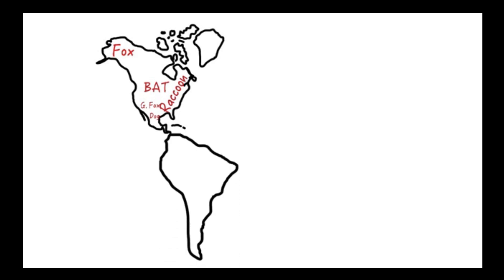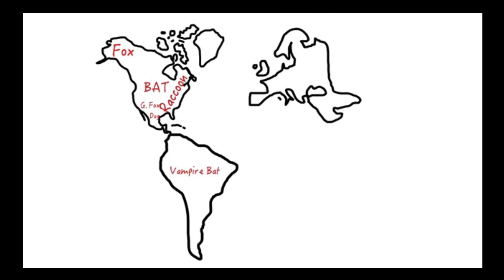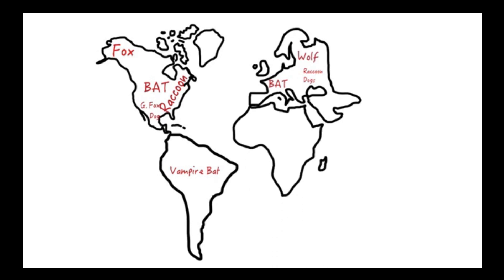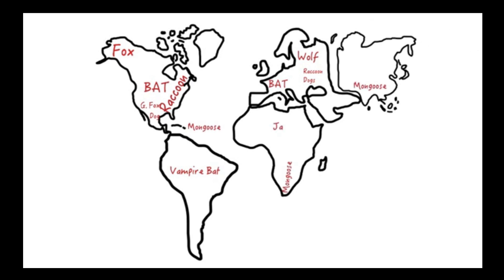The vampire bat is an important reservoir in Latin America and has been associated with rabies in cattle. Insectivorous bats are important vectors of rabies throughout Europe. In western Europe, red fox rabies was eliminated by oral vaccination. In eastern Europe, rabies occurs in raccoon dogs, and in northern Europe in wolves. Wildlife serving as reservoirs in other parts of the world include the mongoose in the Caribbean, southern Africa, and parts of Asia; jackals in Africa; marmosets in Brazil; and ferret badgers in China. Rodents and lagomorphs rarely constitute a risk of exposure to rabies virus.